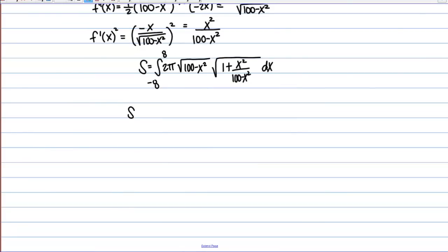In the next step, let's pull that 2 pi out front and then let's also go ahead and combine these square roots so that I have a product under a single root. So I'm going to have 100 minus X squared times the quantity 1 plus X squared over 100 minus X squared.